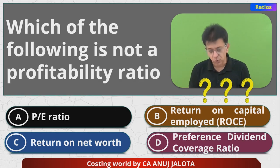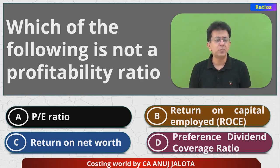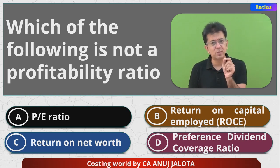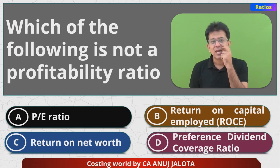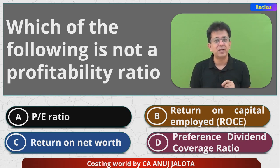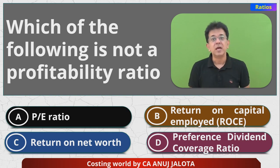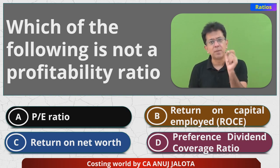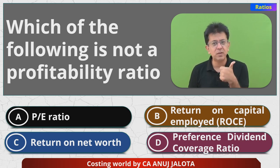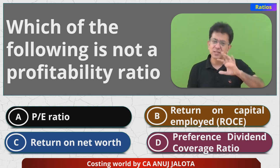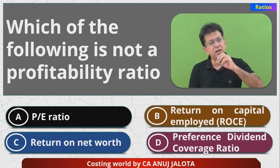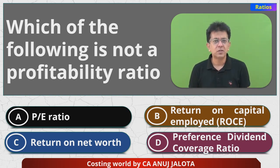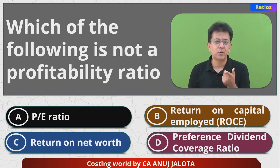Now think about all the ratios. PE ratio — Price Earnings ratio — that's market price upon EPS. Indirectly it conveys profitability. Return on Capital Employed is nothing but your EBIT upon Capital Employed, where Capital Employed means equity plus preference plus debt. There are some alternate formulas possible regarding the numerator.